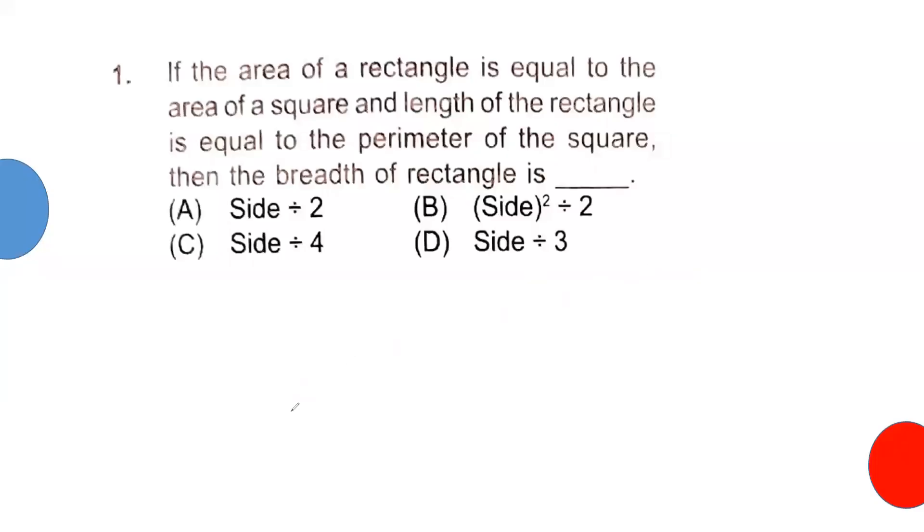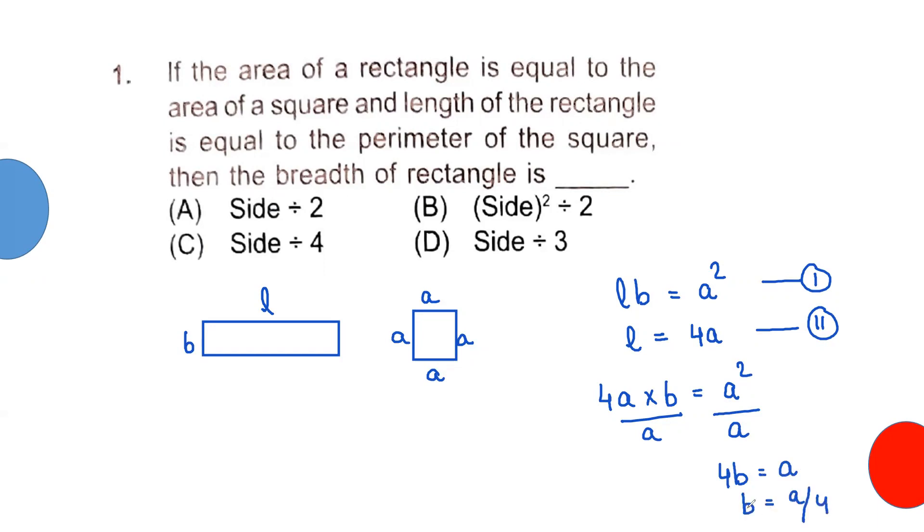We are going to solve all the problems. Here we have a rectangle and a square. Suppose this is L, this is B, and the square's sides are all equal to A. Now, area of rectangle equals area of square - this is equation 1. And length of the rectangle equals perimeter of square - this is equation 2. Substituting equation 2 in 1: 4A times B equals A square. Cancelling A from both sides, 4B equals A, or B equals A by 4. That means breadth equals side by 4. So we got option C.